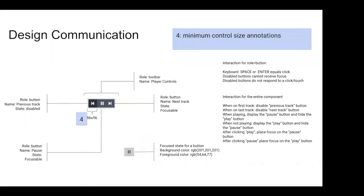Minimum control size annotations are really easy but really easy to forget. WCAG has a requirement — something like 44 by 44 CSS pixels is the minimum touch target size for a control. If you're a designer not considering that, you're setting the developer up for failure if you go below that 44 by 44 threshold. It's really important that you document those dimensions.